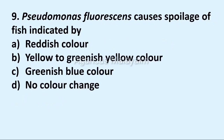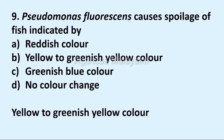Ninth question: Pseudomonas fluorescens causes spoilage of fish indicated by. Option A: reddish color. Option B: yellow to greenish yellow color. Option C: greenish blue color. Option D: no color change. Correct answer: Option B, yellow to greenish yellow color.